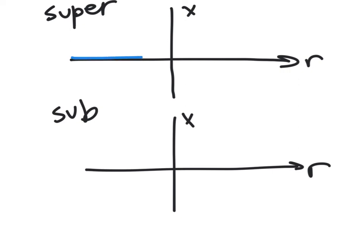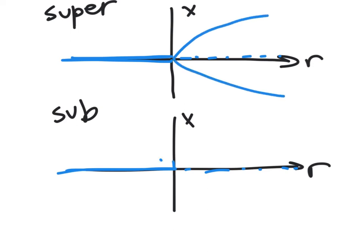In summary: in both the supercritical and subcritical cases, we have a stable zero point, we turn the knob on r, and it becomes unstable, so solutions are no longer attracted to this fixed point. In the supercritical case, new stable solutions are born nearby — we get perturbed very slightly and immediately land on a very nearby branch. Although we don't know which of the two branches we land on, it's quite obvious what happens: we stay on one of those stable branches.